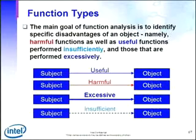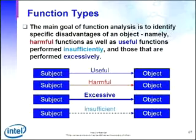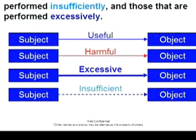The main goal of functional analysis is to identify the specific disadvantages of a system — most importantly, the harmful functions that keep our system from being most ideal. It also helps us identify those components which are not performing effectively. Components that are working excessively or insufficiently are ripe for improvement.